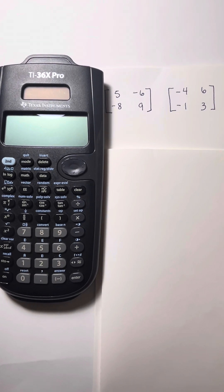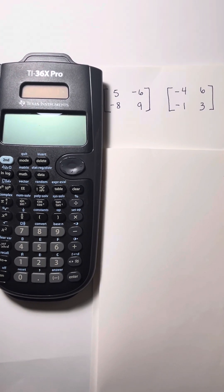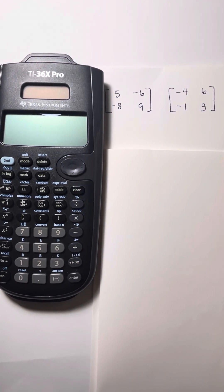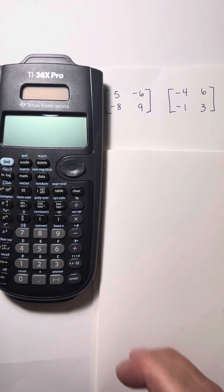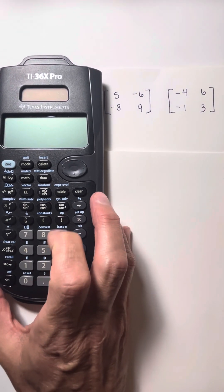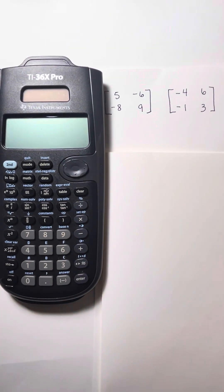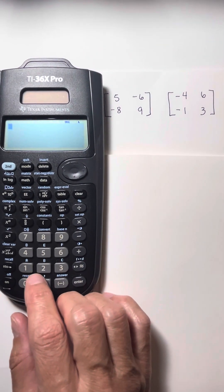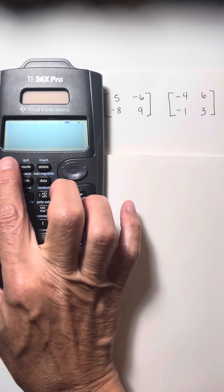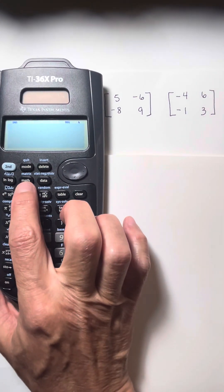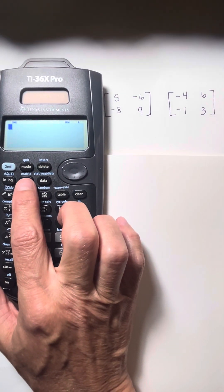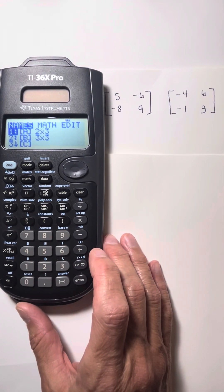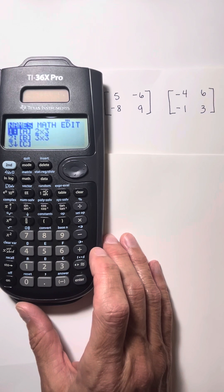We're going to start out with these two square matrices that I have written out here, and we're going to put those into the calculator. The way that we input that into the TI-36X Pro is, first let's turn it on — press the second button, and then the math button above it says 'matrix.' We're going to press that, and that takes us to the matrices in the calculator.